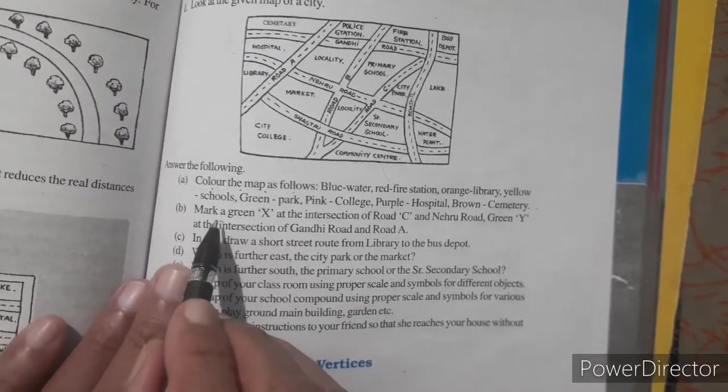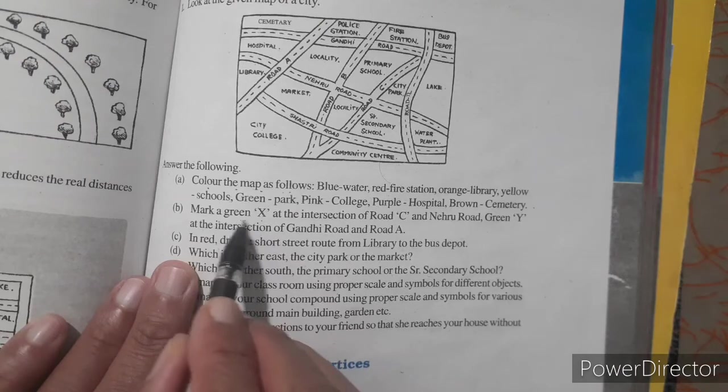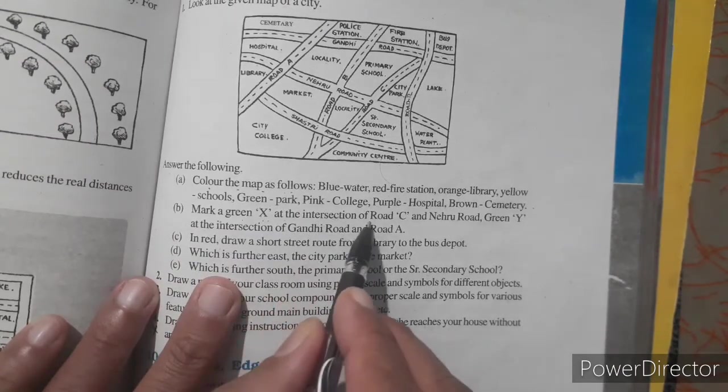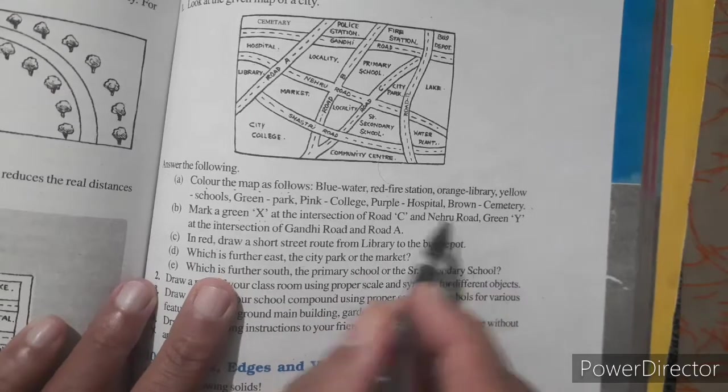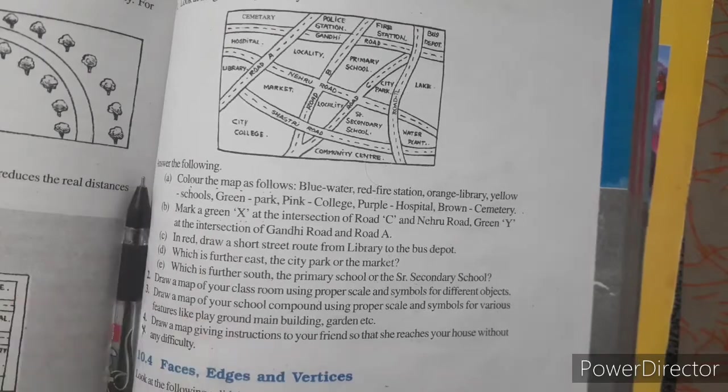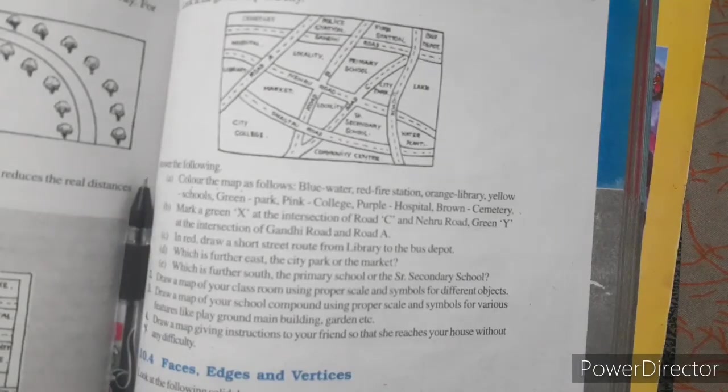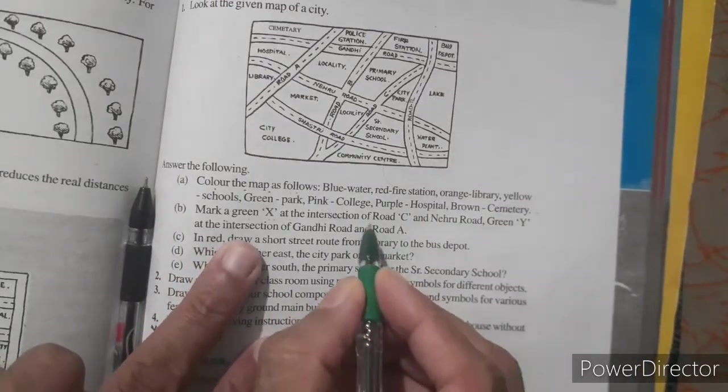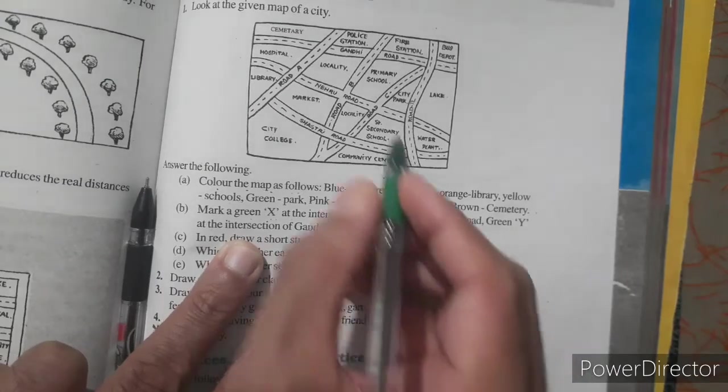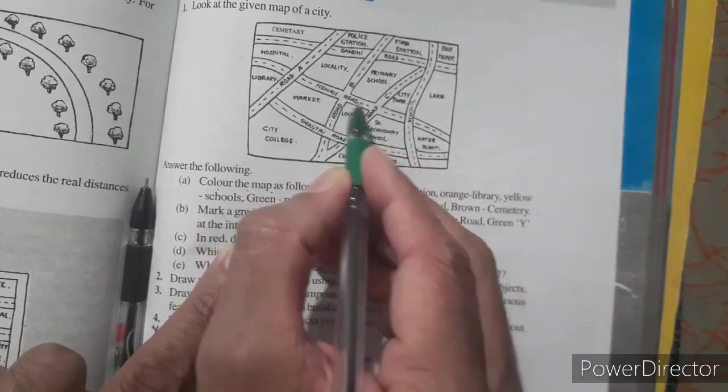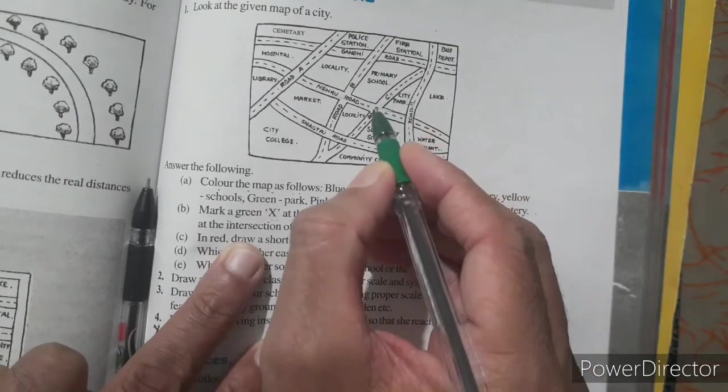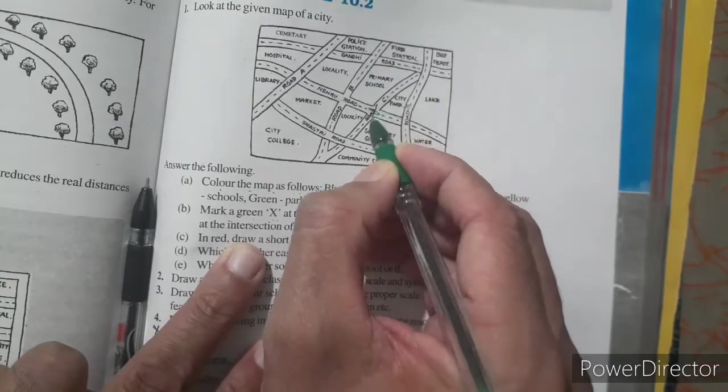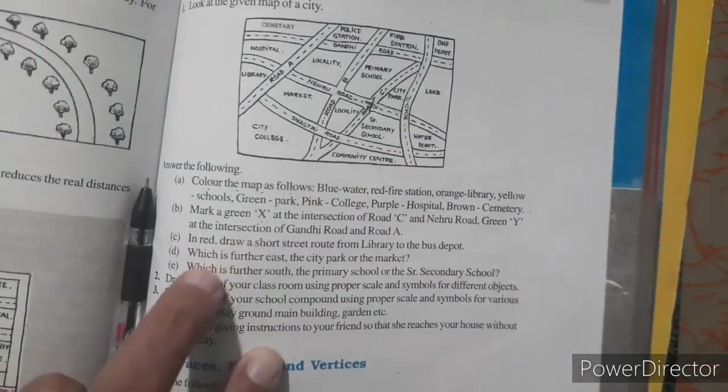Now question number two. Mark a green X, means X with green color, at the intersection of road C and Nehru road. Intersection of C and Nehru road. Look, here the Nehru road is here and road C is here. And intersecting of both one is here. So mark here with green color X.